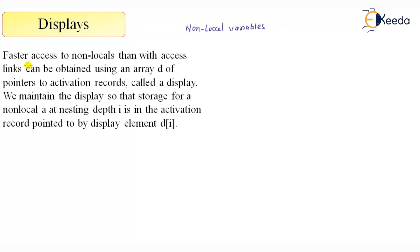Now what are displays? They provide faster access to non-locals than access links. Access links can be obtained using an array. Access links are part of your activation record and they are created based on your scoping rule.